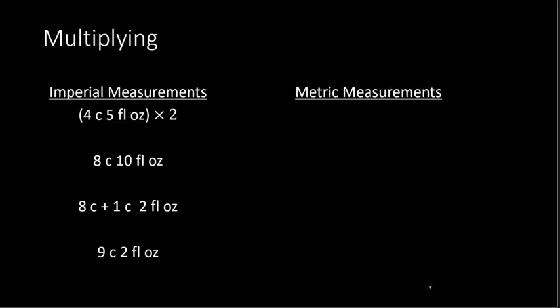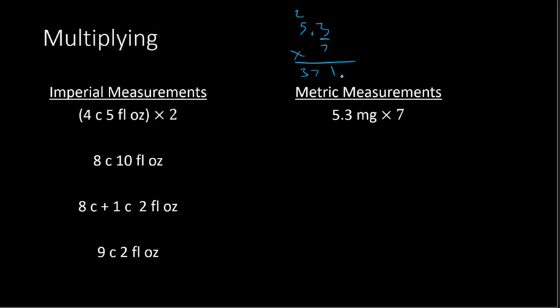For metric measurements, our example is 5.3 milligrams times 7. With metric, we typically just have one type of unit — unlike imperial where we might have cups and ounces separately, with metric we convert everything into a single measurement. So when you multiply, it's simply 5.3 times 7. 7 times 3 is 21, write the 1 and carry the 2. 7 times 5 plus 2 is 37. There is one digit after the decimal point, so the decimal moves one place, giving 37.1. So 5.3 milligrams times 7 equals 37.1 milligrams.